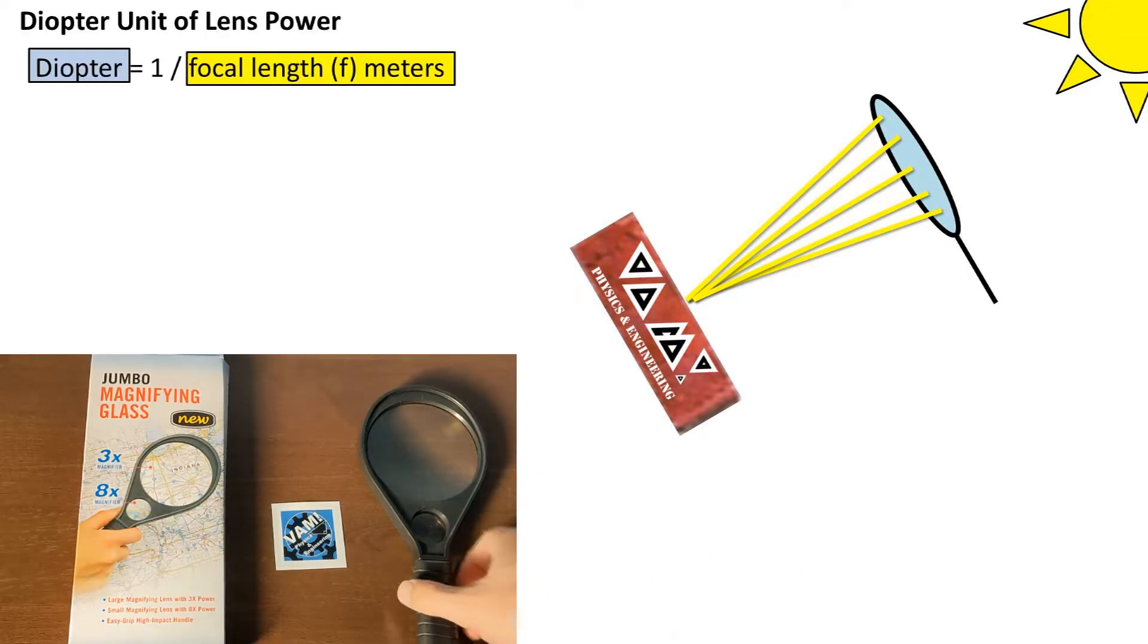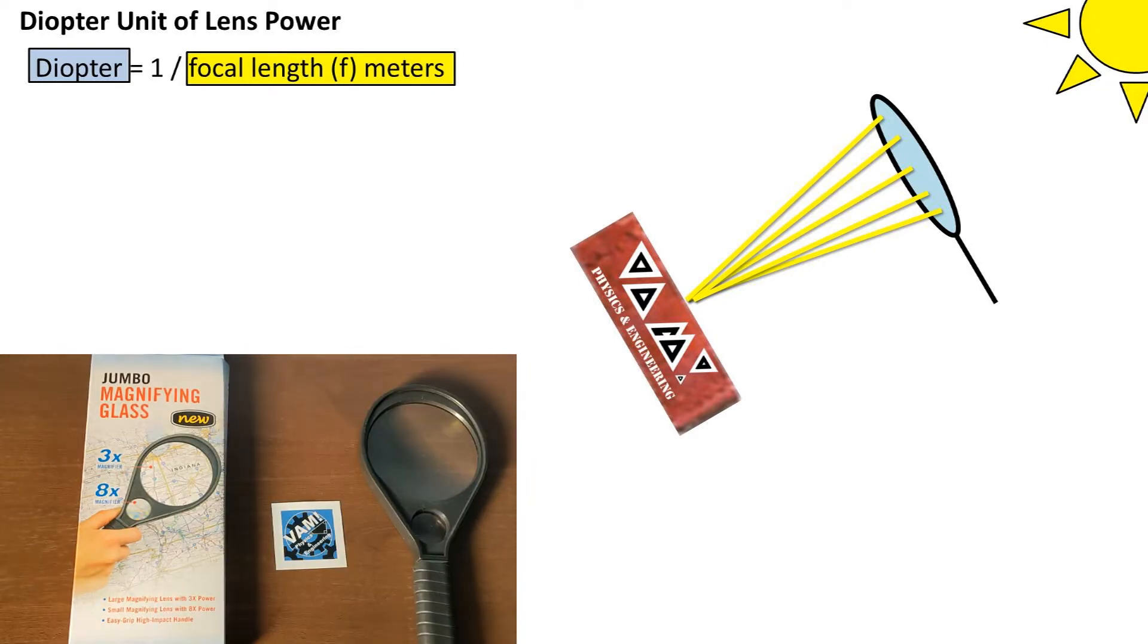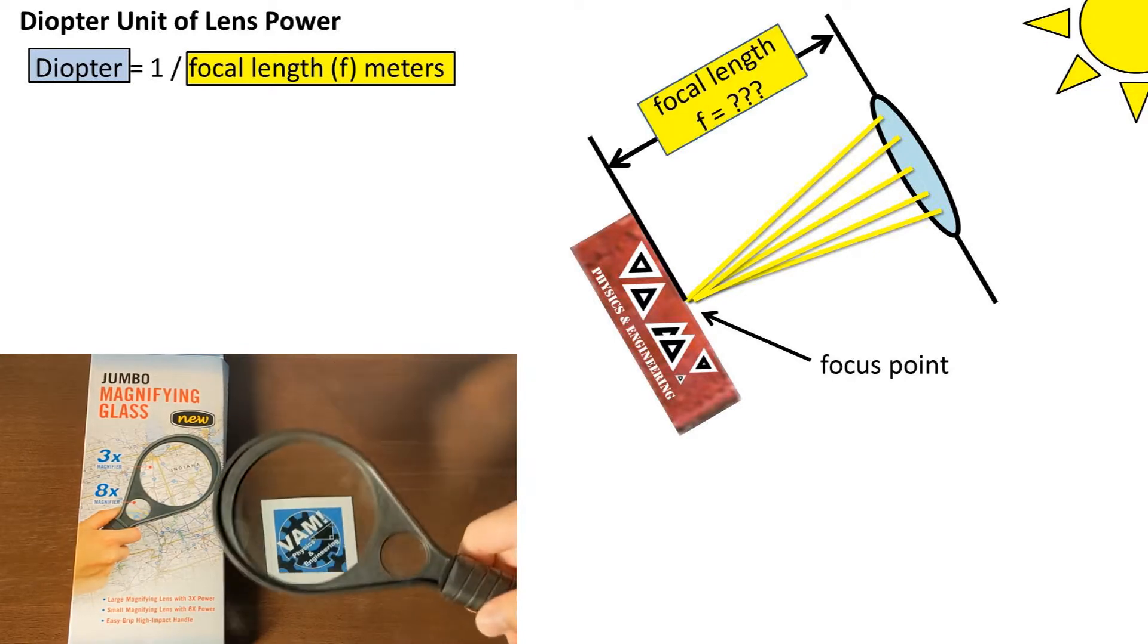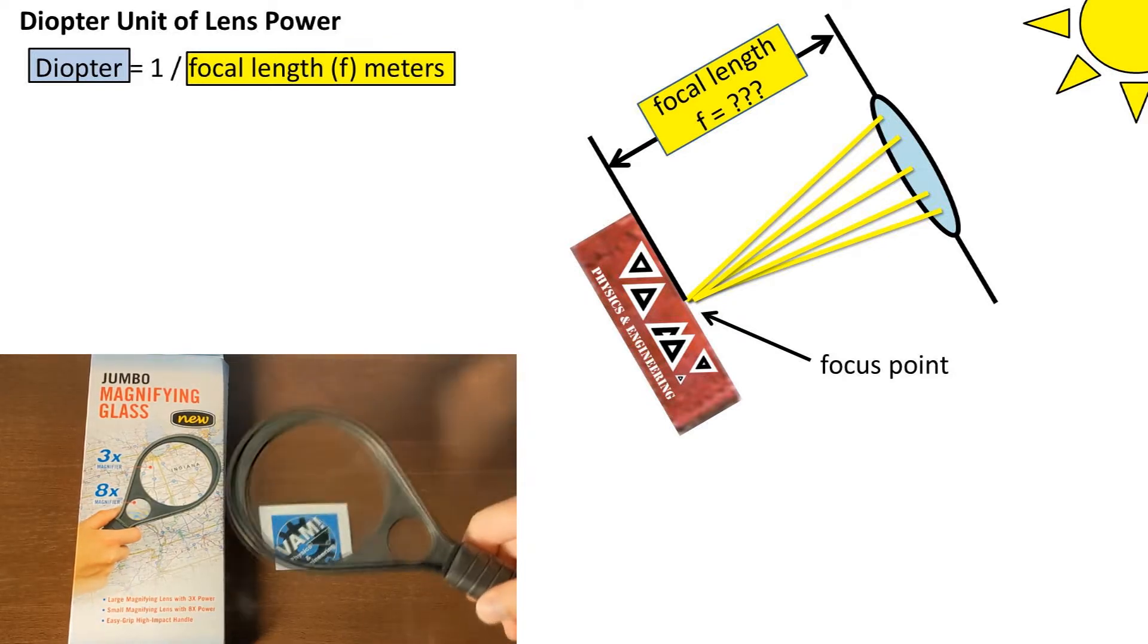So the diopter is the measure of the lens power, which is equal to one over the focal length in meters. Okay, so what is the focal length? It is the distance from the lens to the focal point, or where the light is focused.